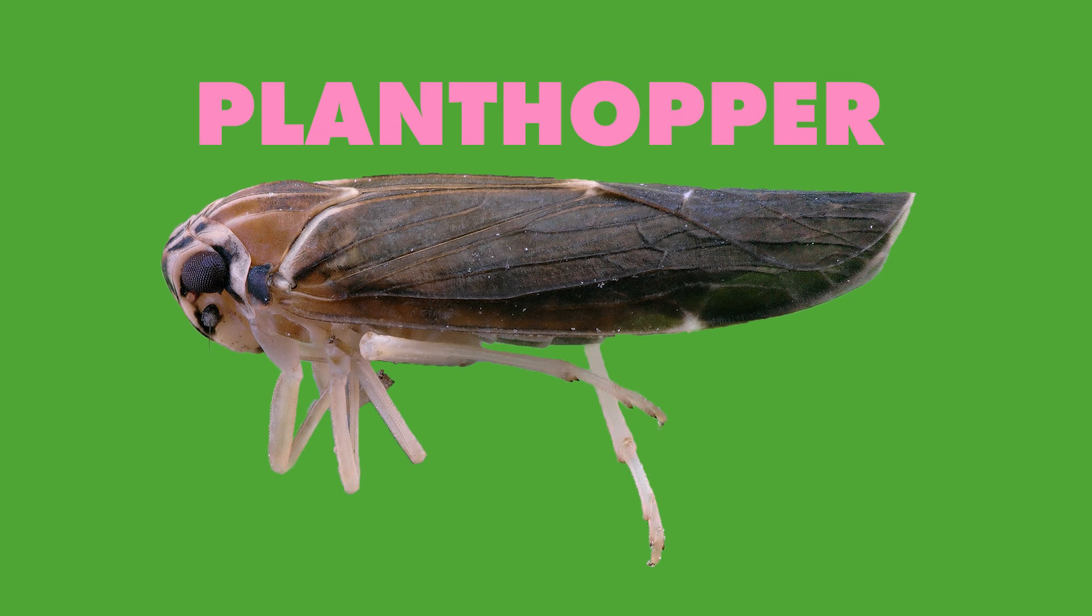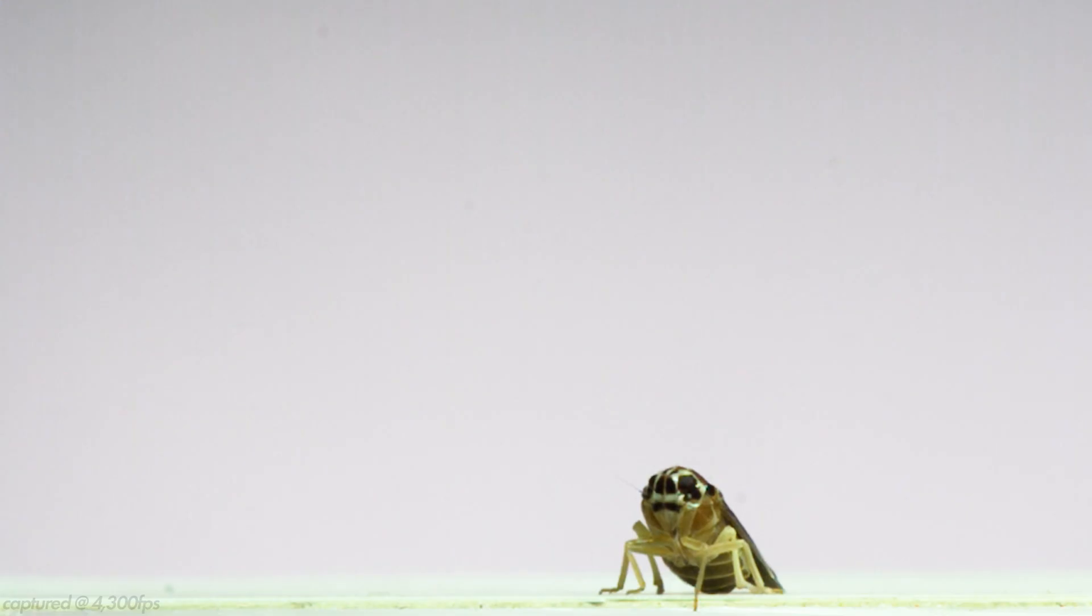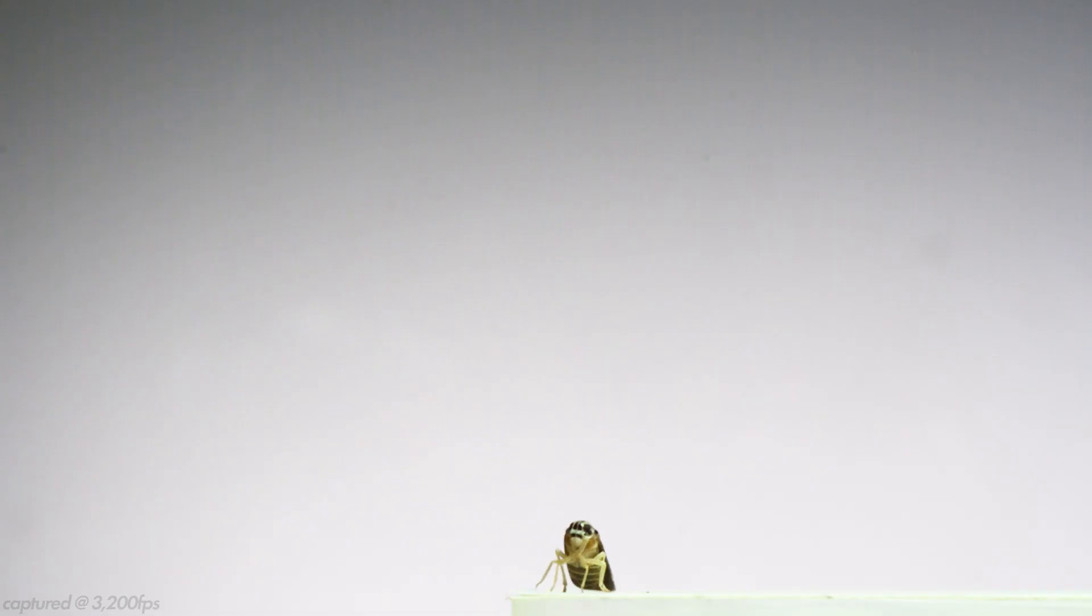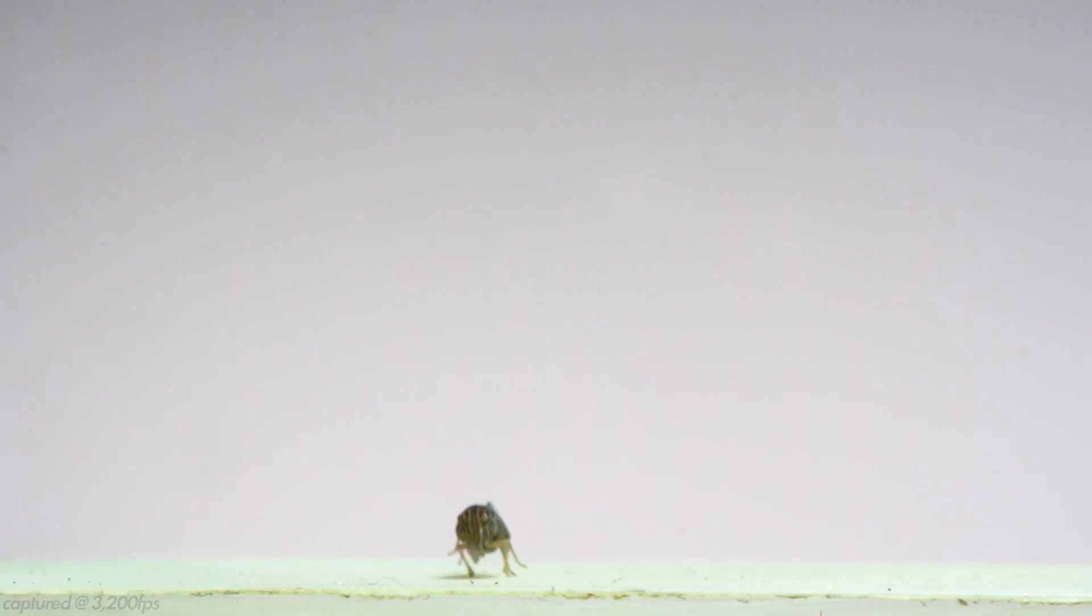The next group is the planthoppers. There are over 12,000 species within this group. Jumps of the ones I filmed seemed chaotic in comparison to the leaf and treehoppers. They tumble up into the air, flipping end over end and rolling. This is likely due to either an out-of-sync release and extension of their legs, or one of the legs slipping as they enter the jump.